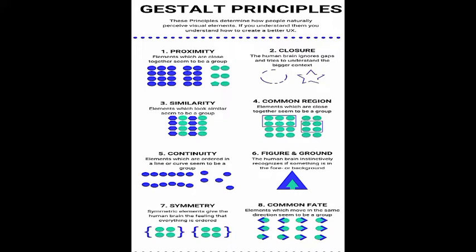Next we have the law of closure. The human brain ignores gaps and tries to understand the bigger context. Look at that diagram — the circle which is not completely formed but exists in parts; still we can say it is of circular form. Similarly, a star that is not exactly closed still appears to form a star.